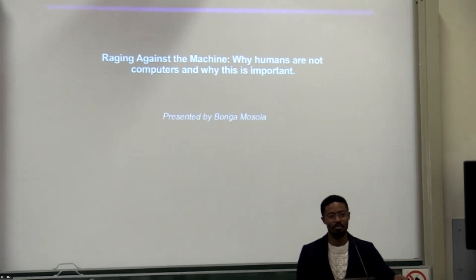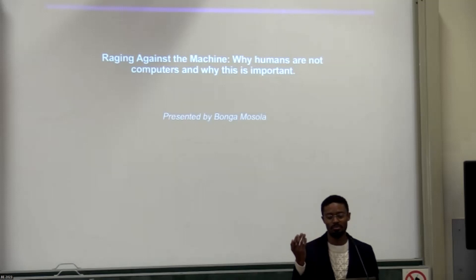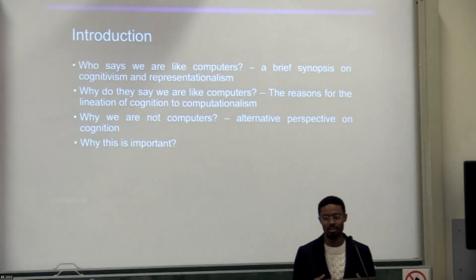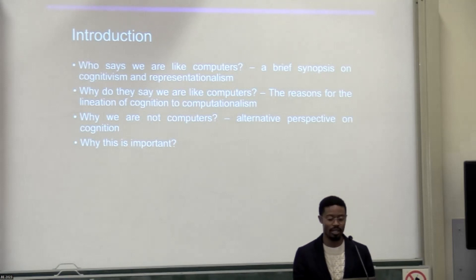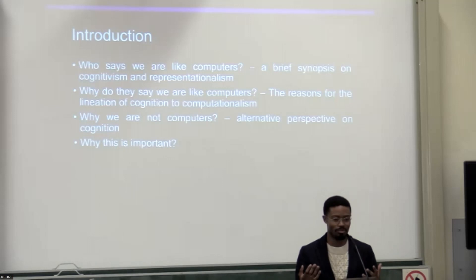So really, this paper that I wrote is about the differences between how human cognition works as opposed to computer information processing, and why this is important. What I touch on is who are the main proponents of cognitivism and representationism — I'll go on and define those things — why they think we think like that, and I then propose alternatives to that viewpoint and talk about why it's important that we delineate the way computers process information from the way humans process information.